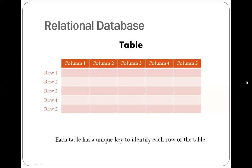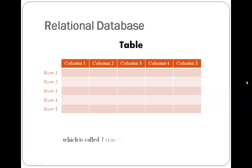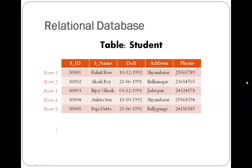Among those attributes, one or more attributes are used to construct a unique key to identify each record of the table — that unique identifier is called a primary key.